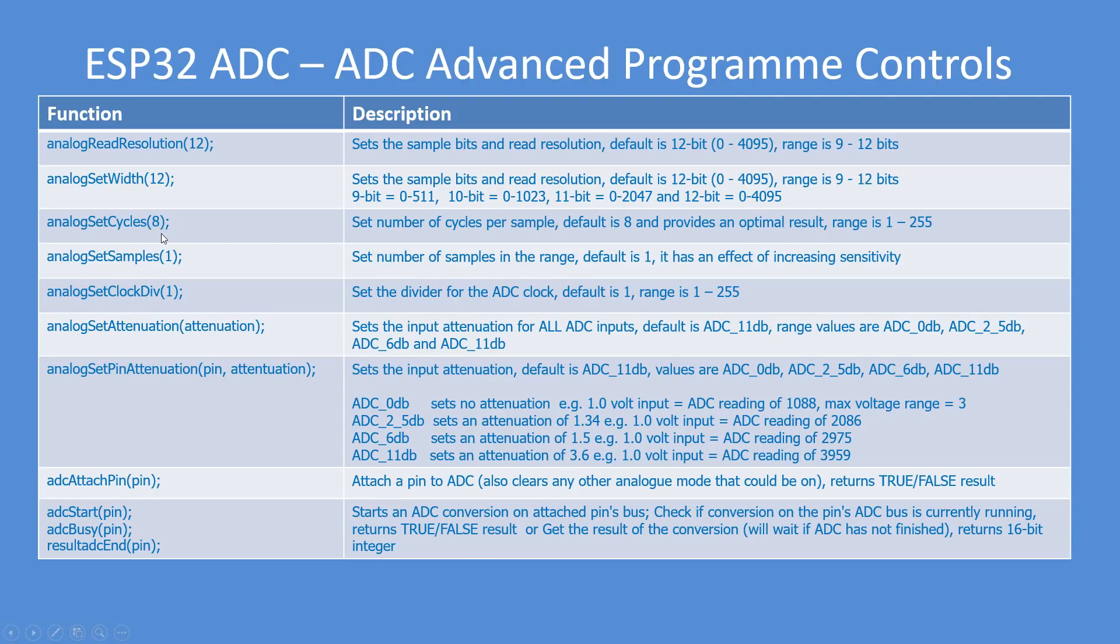Set the number of cycles per sample, default is 8. Set the number of samples, the number of samples taken per cycle, 1, 2, 3 up to 255. Set the clock or the speed of the analog to digital conversion.